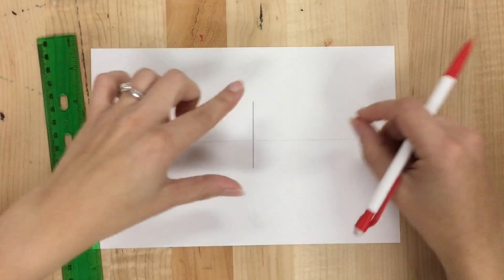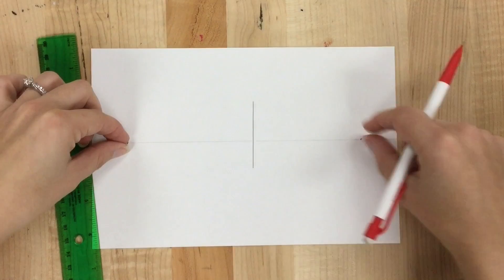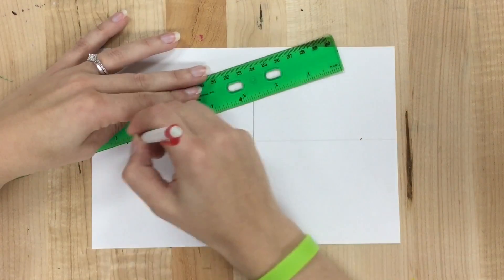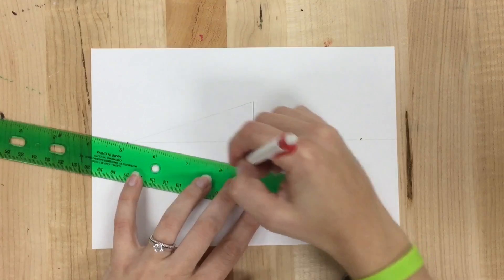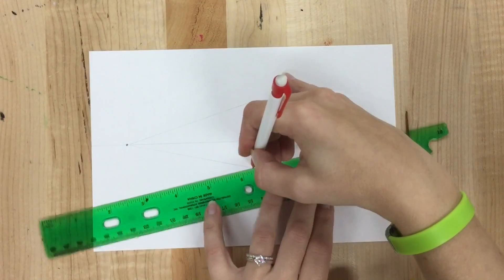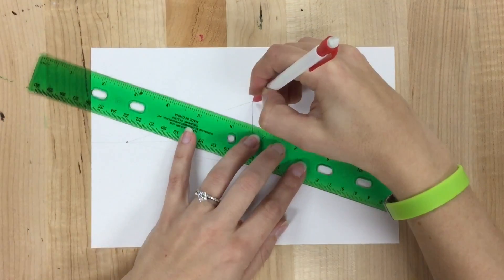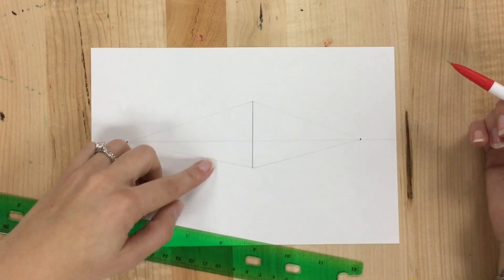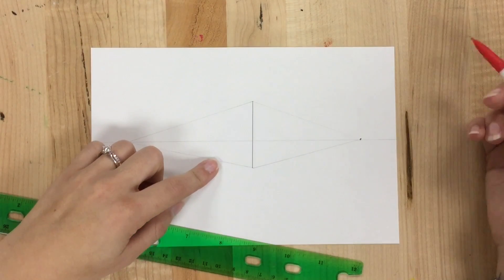So now to make my shape, I need to connect the top and bottom to each vanishing point. I drew these lines kind of light because I know I'm going to erase part of them in the end.